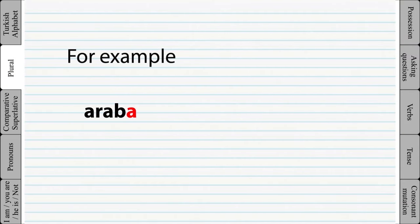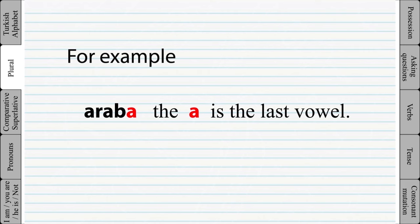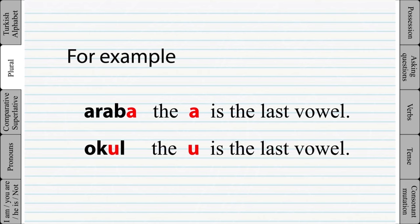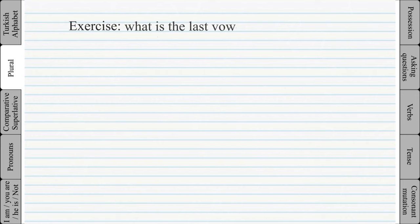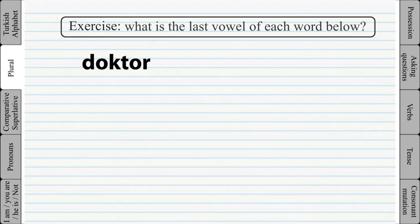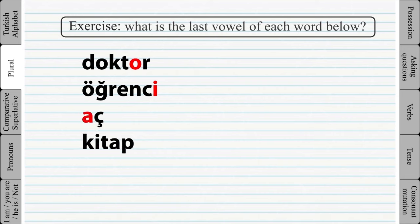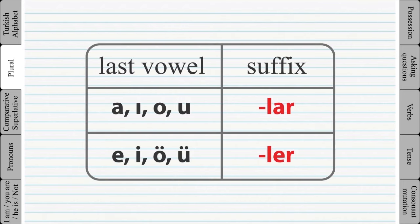For example, in the word 'araba', the 'a' is the last vowel of the word. While in the word 'okul', the 'u' is the last vowel. Look at the table below to see which suffix should be used to make a word plural.